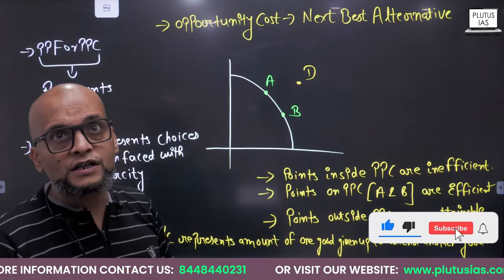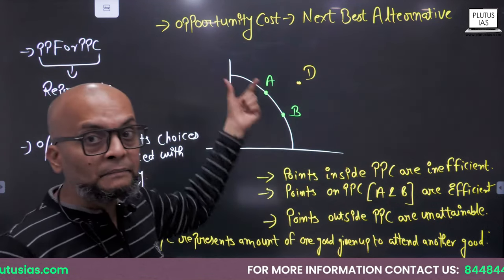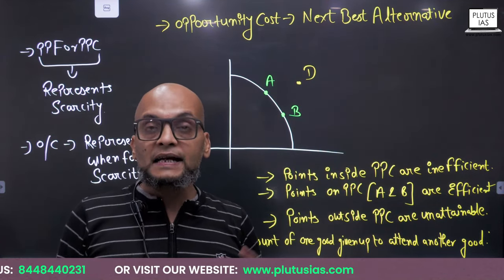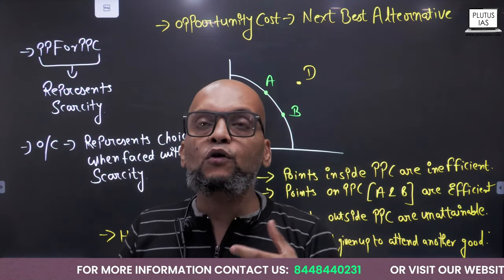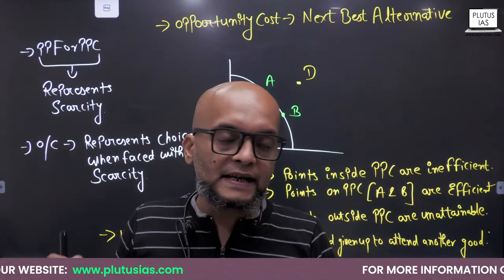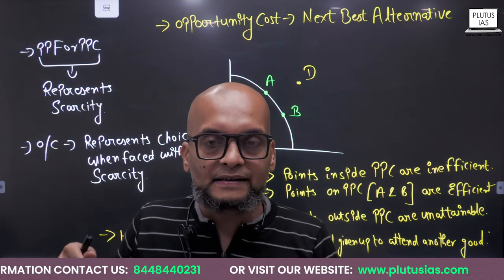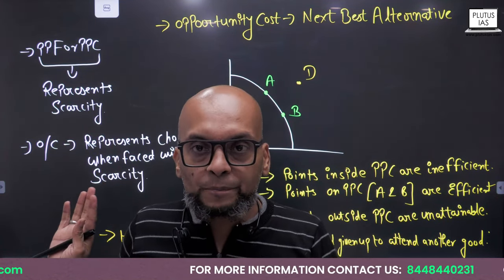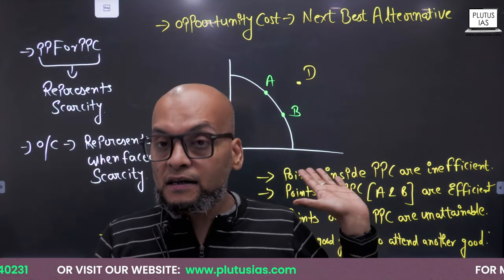There is one more term required to understand PPF, and that term is opportunity cost. Opportunity cost means next best alternative. For example, you are watching my video, which might be five or seven minutes long. Instead of watching my video, you could cook Maggi and eat it in those five minutes. So you have given up the opportunity to cook Maggi — that is the opportunity cost. It is the next best alternative that you have given up in order to do this.